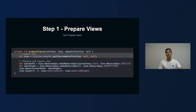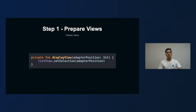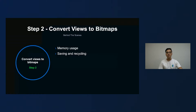So we decided to go with the second option, which is to display views on the screen. In order to do that, it's actually very simple — just one line of code. For example, for this view, you just have to call setSelection and pass in the adapter position. After that, the view would just be shown on the screen. Very simple — this is our way of doing it. And that was our first step.